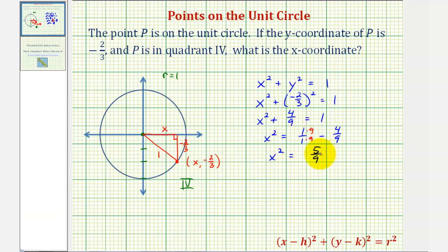Then we'll take the square root of both sides to solve for x. Remember we have both a positive and negative solution for x here. So we have x equals plus or minus the square root of five-ninths equals the square root of five divided by the square root of nine. The square root of nine is three.